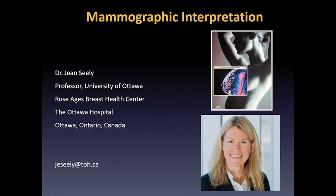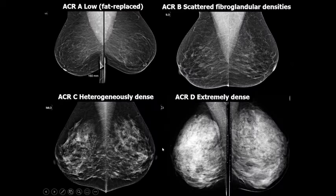The mammogram is a very important diagnostic imaging modality for detecting breast cancer. Mammographic density is an important component of the mammogram and is classified according to the American College of Radiology BI-RADS lexicon into low-density or fatty-replaced, scattered fibroglandular densities or B, Category C heterogeneously dense, and Category D extremely dense.